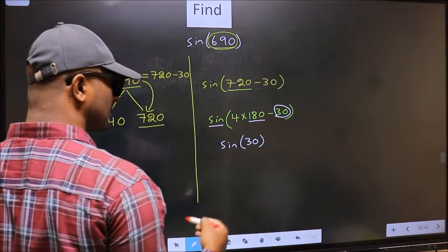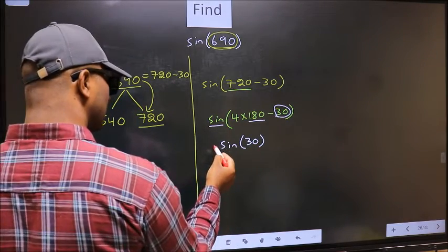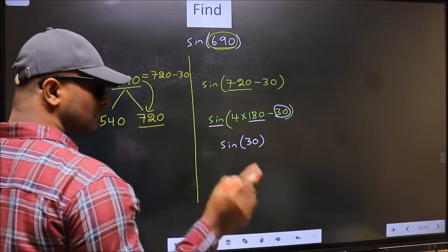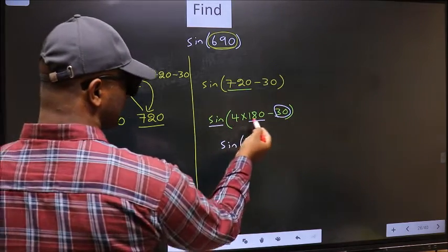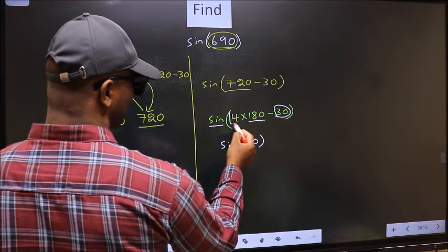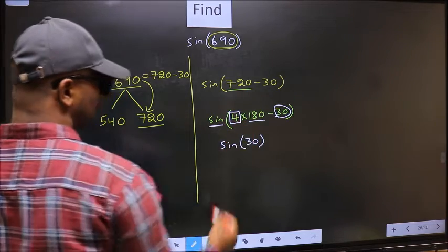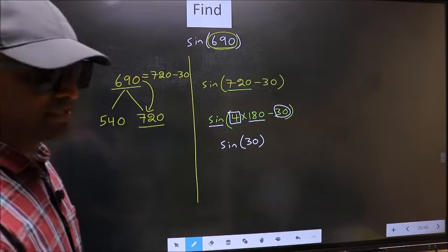Now the question is, will we get here plus or minus? To answer that, we should look at the number before 180. That is 4. And 4 is even.